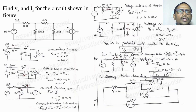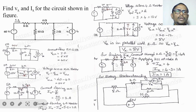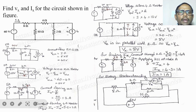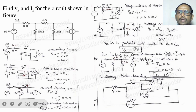The third problem: find Vx and Ix for the circuit shown. They are asking for the voltage and current across the current source. The circuit has a 60 volt source, a 5 ampere source, and several resistances. The redrawn diagram is provided for easy understanding — both circuits are equivalent.